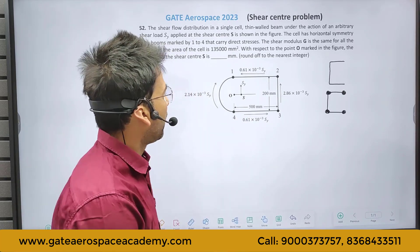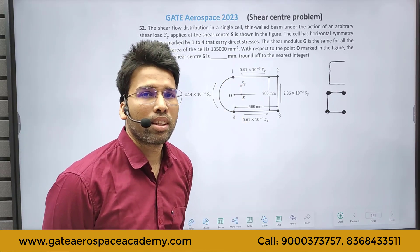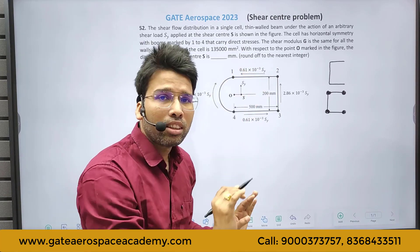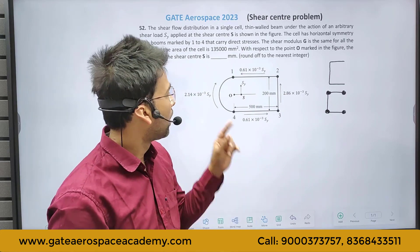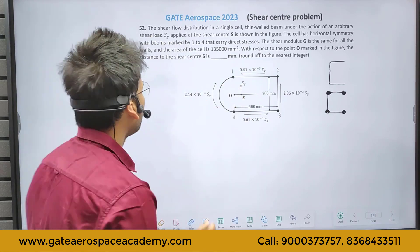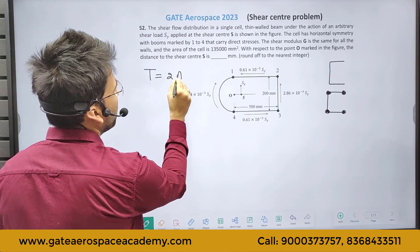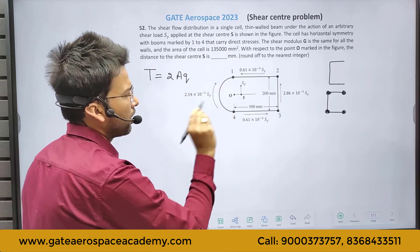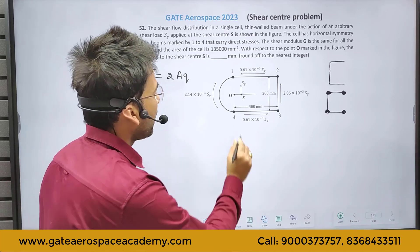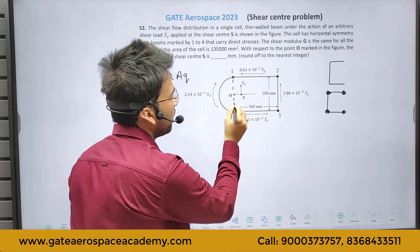Now what about the curved web section — how to analyse this? This type of structure with only a curved section is already there in the notes as the third solved problem. From that we know we have to apply the Bredt-Batho theorem, that is torque equals 2AQ, for this curved section, where Q is shear flow which is already given.